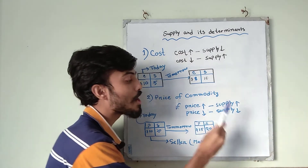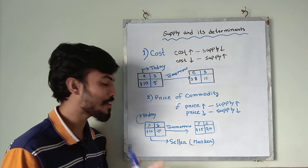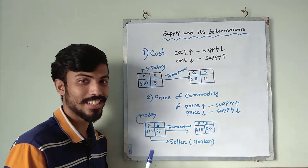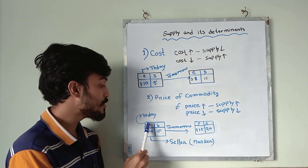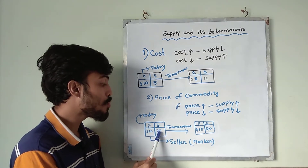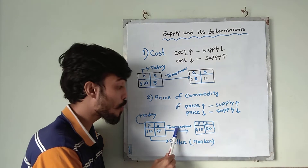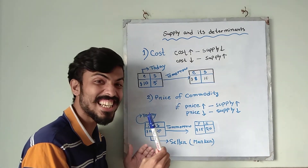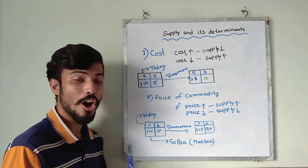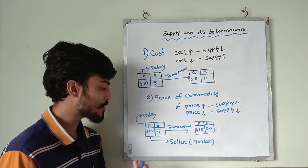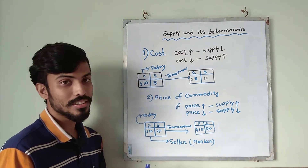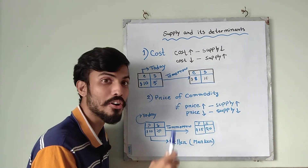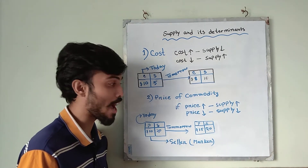For example, you are a seller who produces markers. The price of each marker today is $10 and you are supplying 20 units. But tomorrow you find that the price of each marker has increased. You are going to increase your supply because yesterday you were getting $10 and today you are getting $15 — an extra $5 for each marker. So if price increases, supply increases; if price decreases, supply decreases.